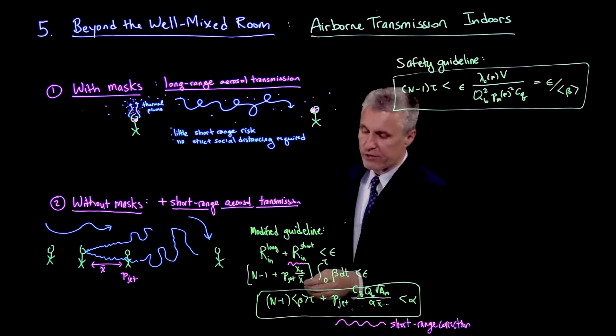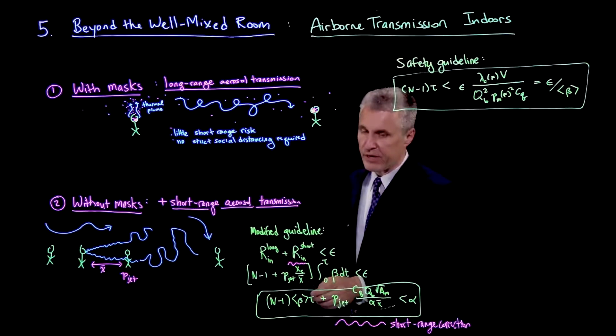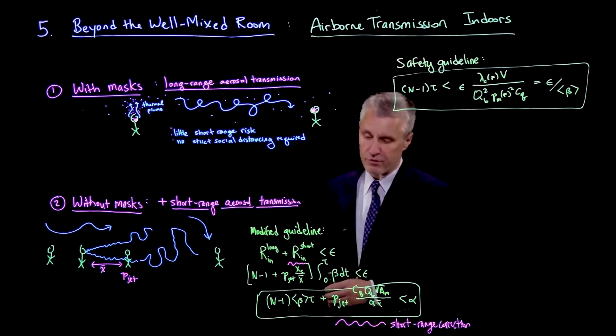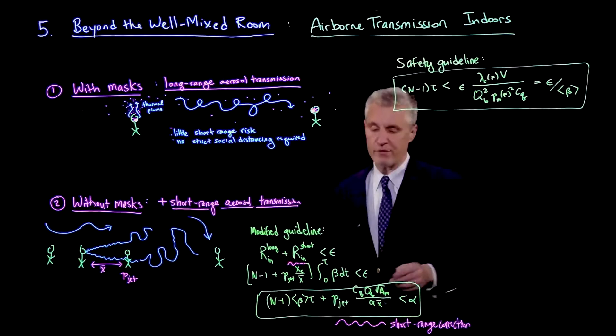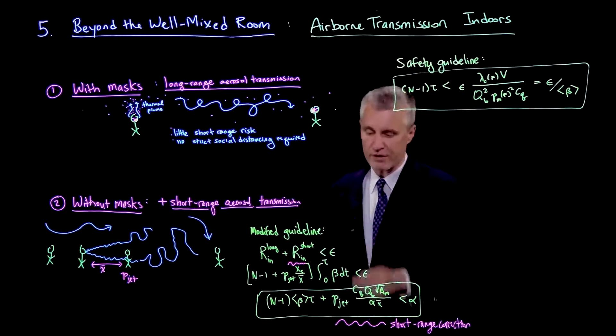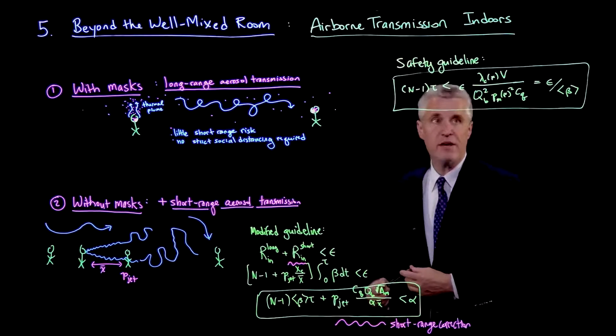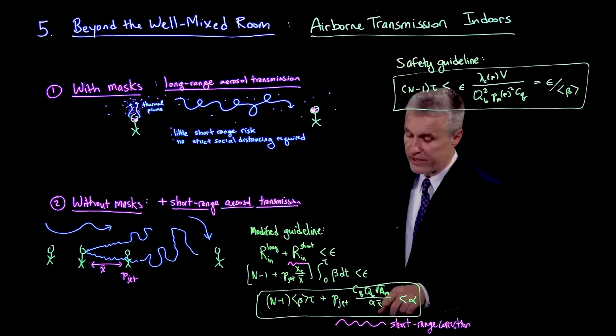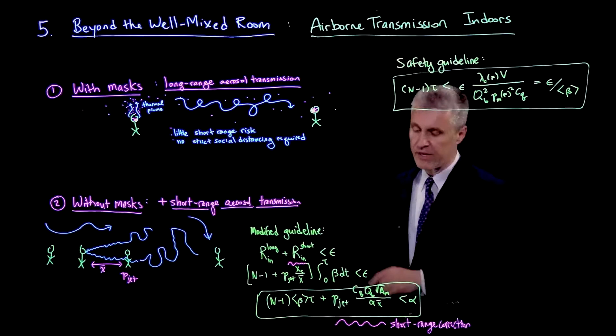And so this factor we've already calculated. The ratio of the short range term to the long range term is xc over x, or x bar, times pjet. It's a very simple correction. If we plug back in our estimates for this average beta, then we arrive at this formula here. The first term is the same guideline we already have. And there's a new term now, which, notice, does not involve n. And it doesn't have the mask factor, of course, as well. But it involves the length, so social distancing. And it involves the mouth area and the breathing rate.